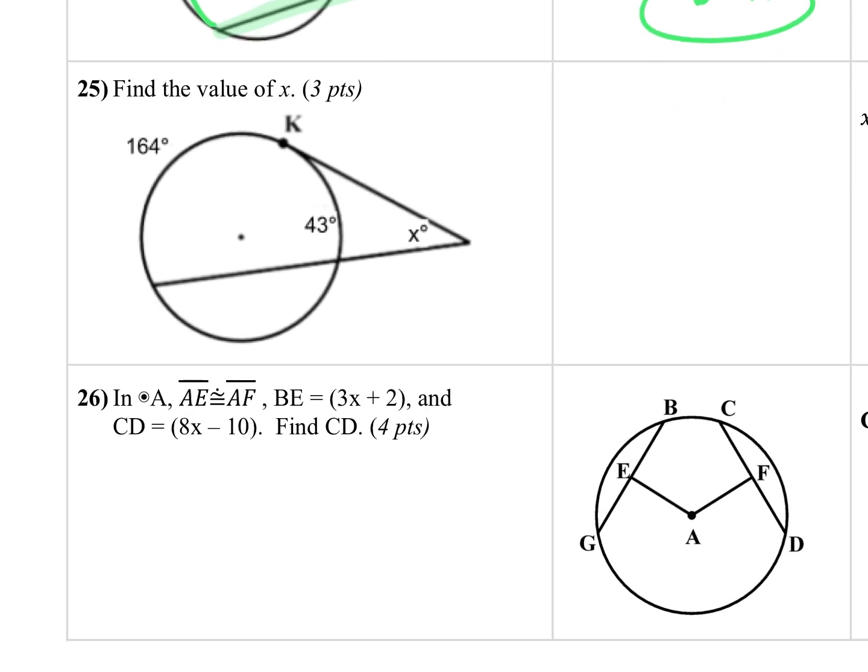On number 25, I'm going to do the exact same thing. So here's my tangent and my secant. So I'm going to do this arc, the major arc, subtracting the minor arc. So 164 minus 43, but I need half of that is equal to my x. I'm going to type all of that into my calculator. So I'm going to type in one half of 164 minus 43. That gave me 60.5 is equal to x. Asked for the value of x. So I am done.